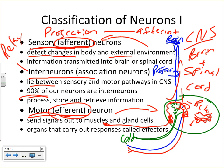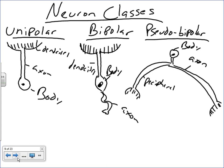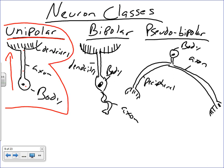We also classify neurons by their structure — their look. We can break them down into unipolar, bipolar, and multipolar. Unipolar neurons have a body, axon, and dendrites all in one projection. Unipolar neurons are primarily found in invertebrate animals, especially in their autonomic nervous systems, so we won't put much focus on them in human anatomy and physiology.